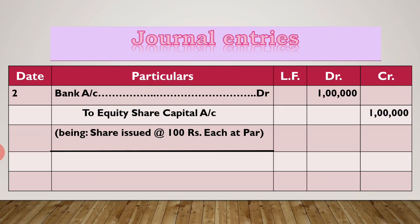Now the second entry: issue of new shares. Here in the question we issued new shares 1,000. So we write: bank account debit to equity share capital account 1 lakh rupees — 1 lakh means 1,000 into 100 rupees each. Here the shares are issued at par because it is not given in the question at premium or at discount, so we assume shares are issued at par. Being: shares issued 100 rupees each at par.